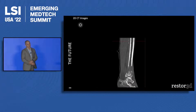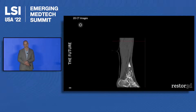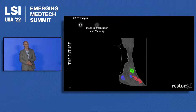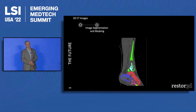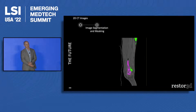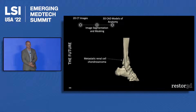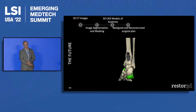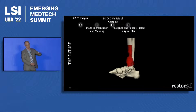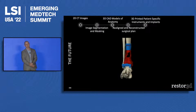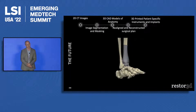This is an example of a very complex surgery — an osteosarcoma or chondrosarcoma of the foot. You start with a CT image of the foot. We then come in and mask and segment that, breaking down all the bones and figuring out where they're positioned. We convert that into a three-dimensional model of the anatomy, identify the chondrosarcoma, and then realign and reconstruct it to develop a surgical plan. In this case, that involves a resection of the bone. We plan and 3D print instruments specific to that patient and that resection.